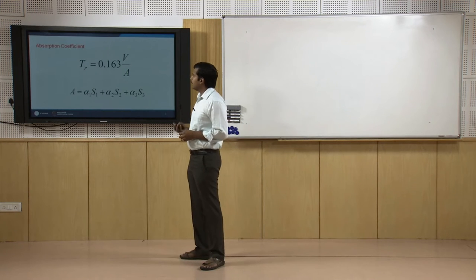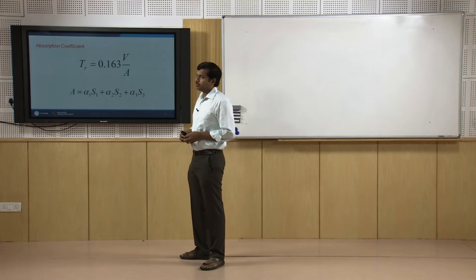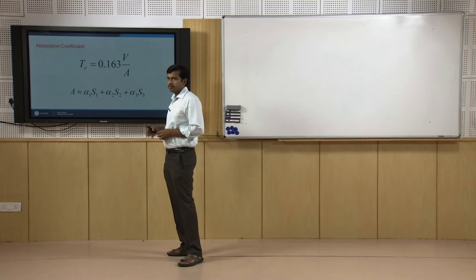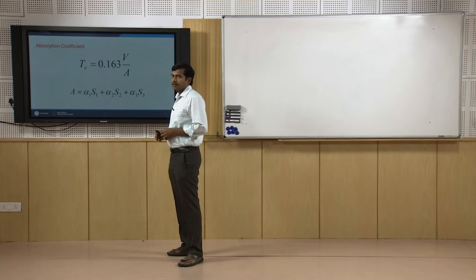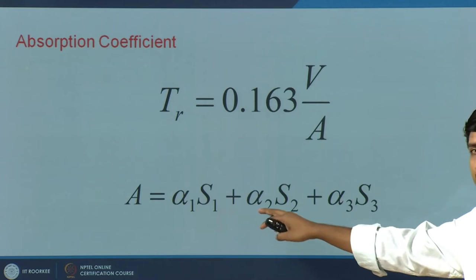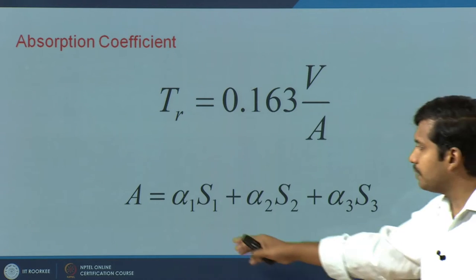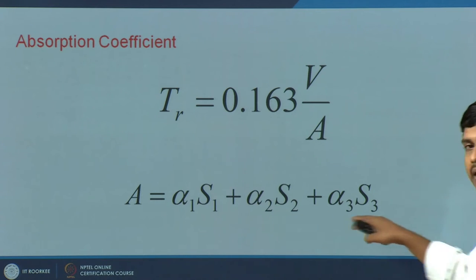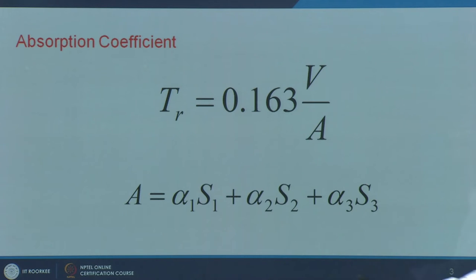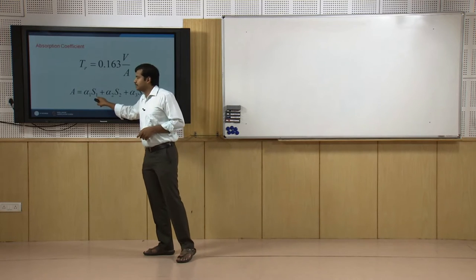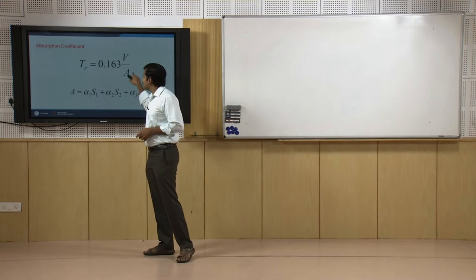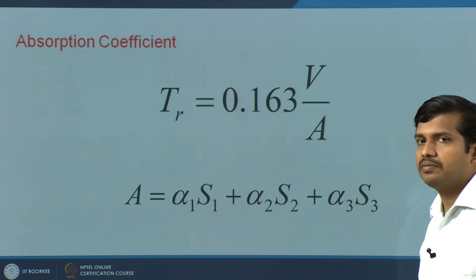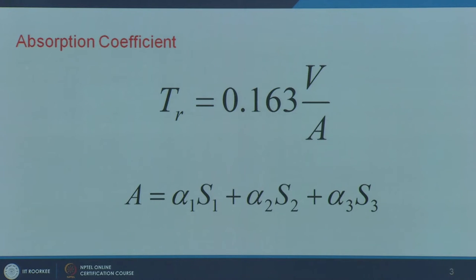A quick recap of what we saw last time. This was the reverberation time equation — Sabine's formula — where reverberation time equals 0.163 times volume divided by absorption. A is alpha, the absorption coefficient of a specific material, multiplied by the surface area of that material's application. If you have n number of materials spread over specific surface areas, you can use a sigma summation of the specific absorption coefficient times the surface area. This number A is referred to in terms of Sabines, which is the unit for absorption.